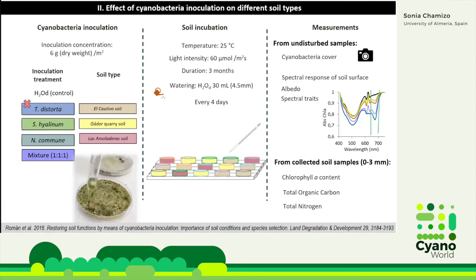We developed different experiments to analyze the effect of cyanobacteria inoculation on different soil types. We worked mainly with the heterocystous species because they are able to fix nitrogen and also because they are easier to culture. We performed an experiment where we inoculated these strains individually and also as a mixture — a consortium — on the soil, using these three soil types belonging to each of the study areas. We incubated the samples for three months at a concentration of six grams per square meter of the inoculum.